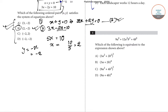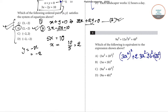Now for question number 4: 9a⁴ plus 12a²b² plus 4b⁴ — which of the following is equivalent to this expression? We can rewrite 9a⁴ as (3a²)², and recognize that 12a²b² equals 2 × 3a² × 2b², and 4b⁴ as (2b²)².